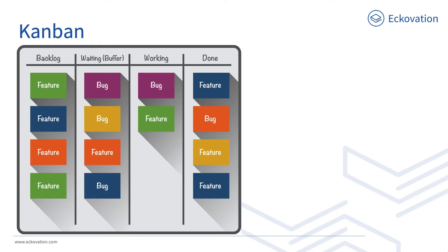Kanban is based on three different principles. First, visualize the daily workflow, which helps to see all the items in context to each other and how they can be interrelated. Second, limit work in progress, which helps to balance the flow-based approach so teams don't start and commit to too much work at once. And lastly, enhance the flow — when a module is complete, the next item or task is introduced from the product backlog for development.